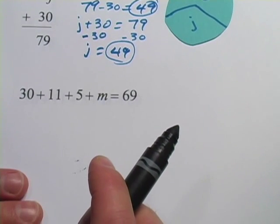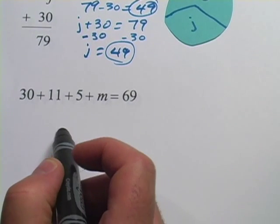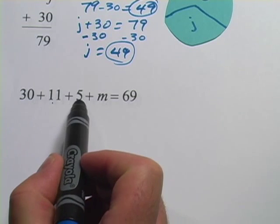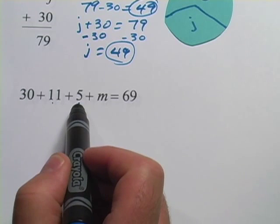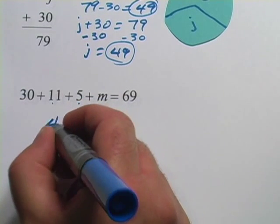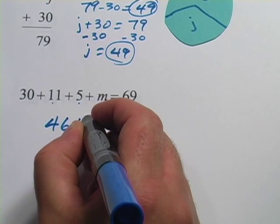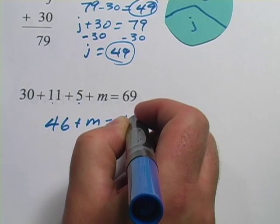One more of these, and this one looks a little harder, but it's not really. These numbers, you can simplify this by just adding them all up. 30 + 11 is 41, plus 5 is 46. So this is the same as 46 + m = 69.